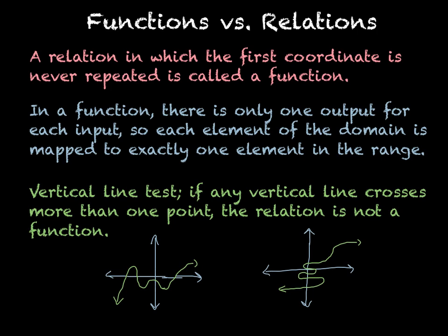So each element of the domain is mapped to exactly one element of the range. Now the vertical line test is a way to test a relation that is on a coordinate system. The vertical line test says if any vertical line crosses more than one point, then the relation is not a function.